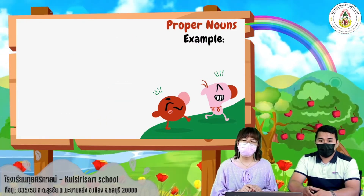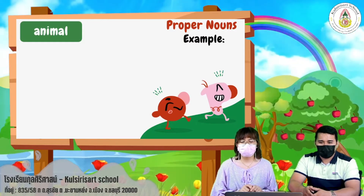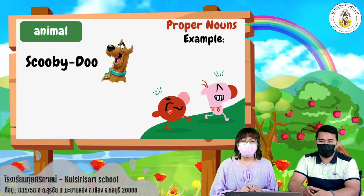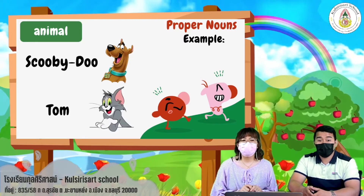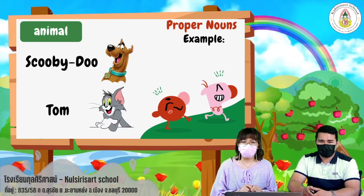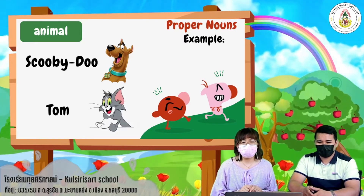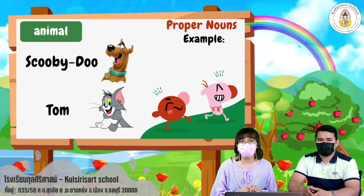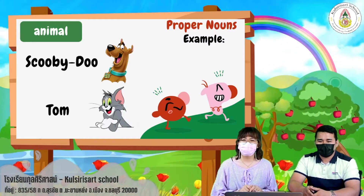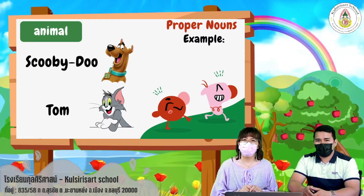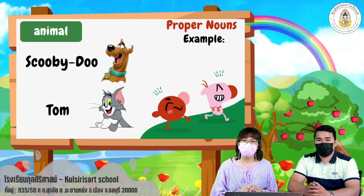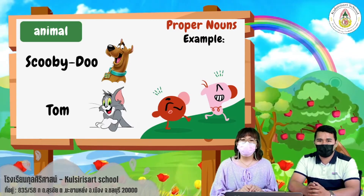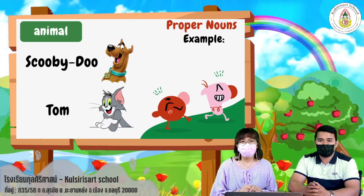Next example, animal — first, Scooby-Doo, and next is Tom. Scooby-Doo starts with a big letter S, and Tom starts with a big letter T.